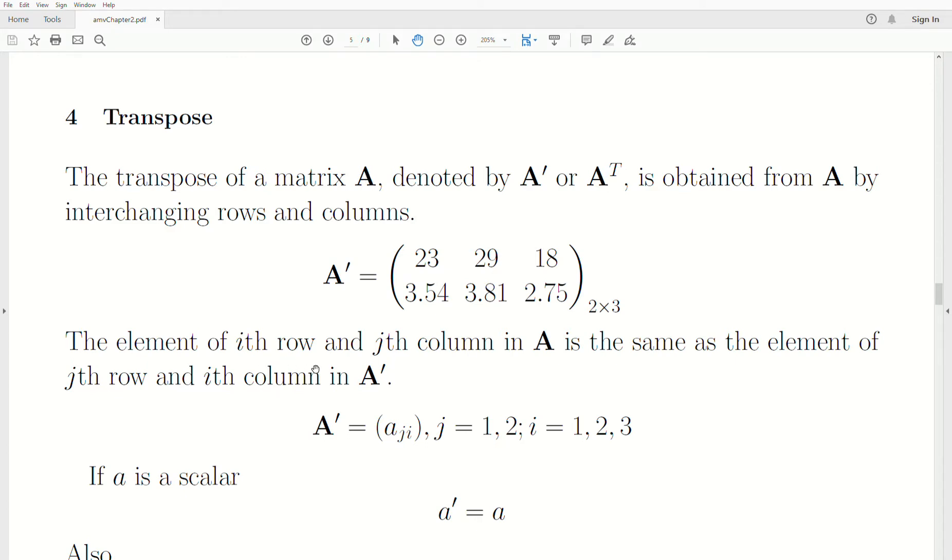So to think of it a little more mathematically, if the element of the ith row and jth column of A is the same element of the jth row and ith column of A transpose, so the indices have reversed.